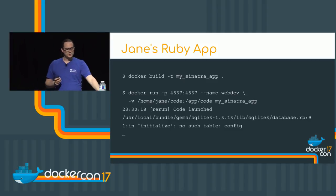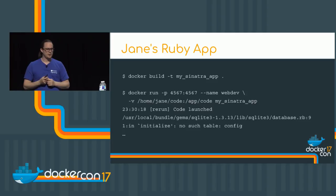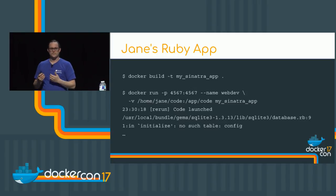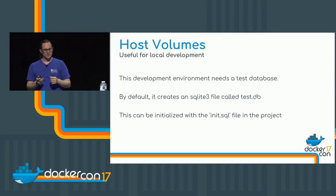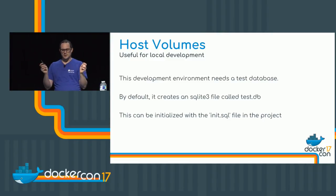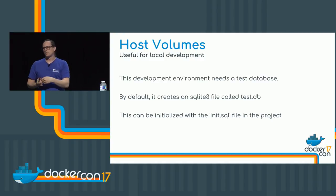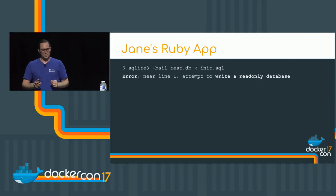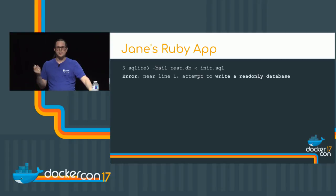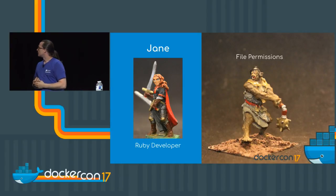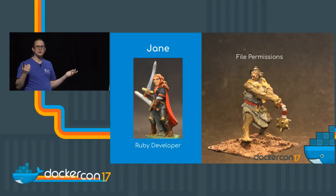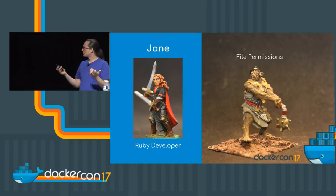She goes to run this and gets an error message from the SQLite gem that says 'no such table config.' She says, oh yeah, this is the first time running this code for this development environment — I need to initialize the schema for this SQLite development database. She pulls out the command to do that, has an init.sql file that needs to run and will put the schema in test.db. But SQLite3 complains: error — attempt to write to read-only database. This is the unexpected situation Jane has run into — a file permissions issue. She's like, I'm working in my home directory, why do I get permission denied? Let's characterize this problem.